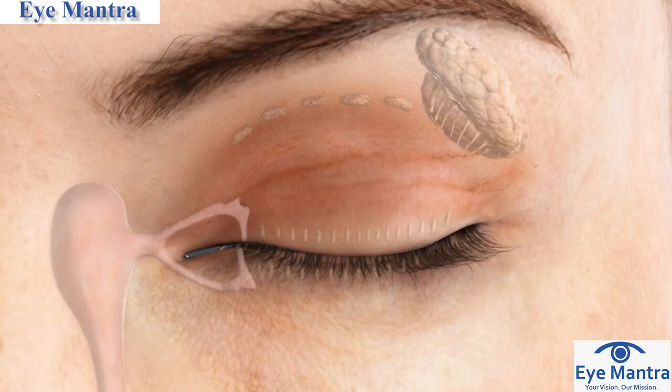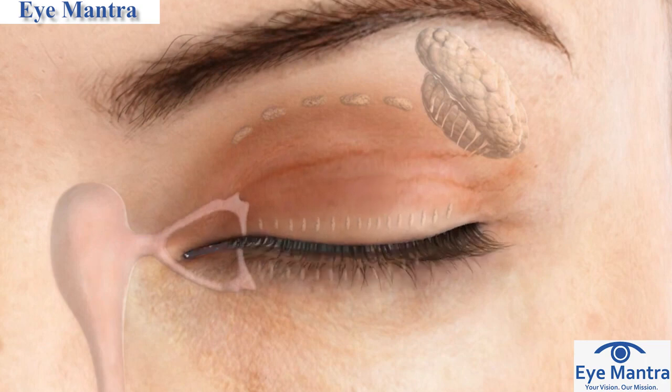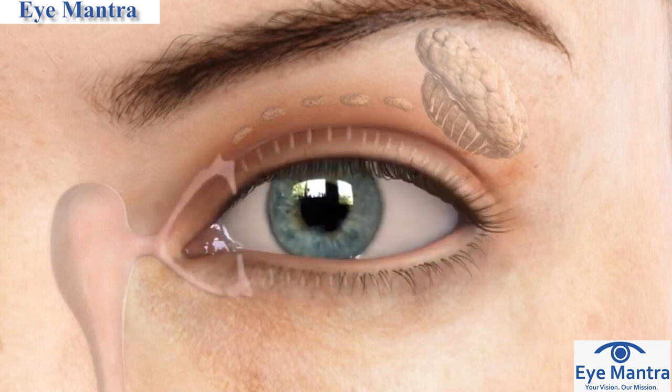Excess tears flow out of the eye into two tiny ducts, which then drain into the nasal passage.